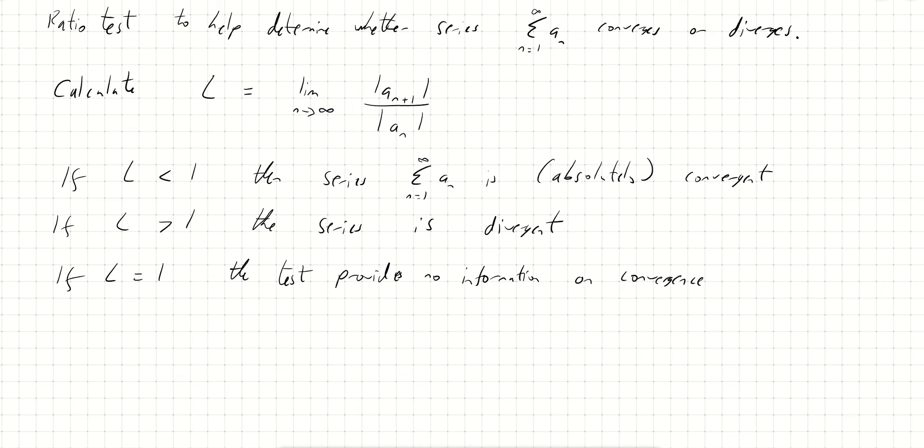The reason L equals one is inconclusive is that there are cases where L equals one and the series diverges, and other cases where L equals one and the series converges. So in those examples we would need a different test.